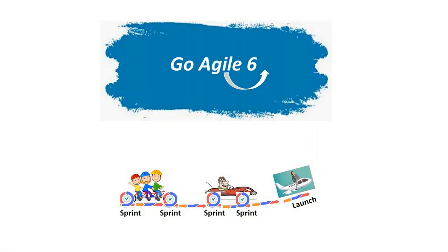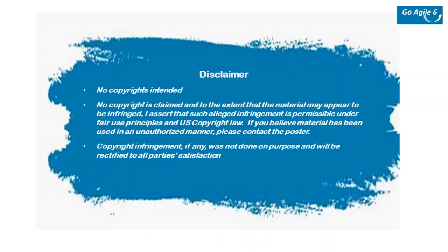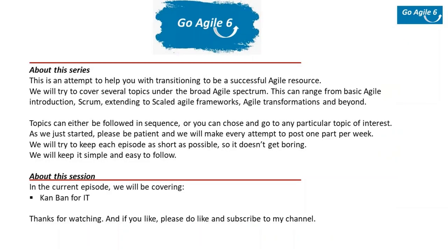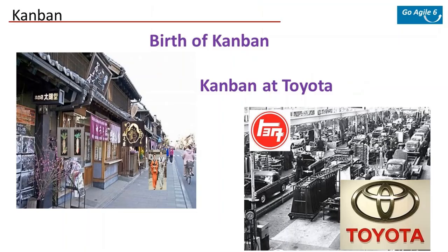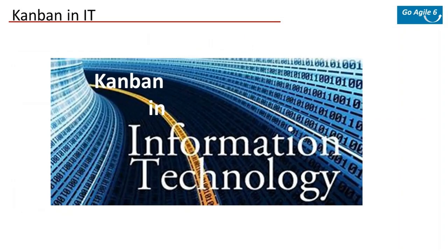Hello friends, welcome back to Go Agile 6. Last time we started Kanban, looking at its birth and how it got adopted at the Toyota Production System. Today we will look at how Kanban found its way into IT and how it became one of the popular agile frameworks. Over time the Toyota Production System gained a lot of popularity globally, and project managers all over the world started trying it in different flavors. The biggest breakthrough came in the software industry.